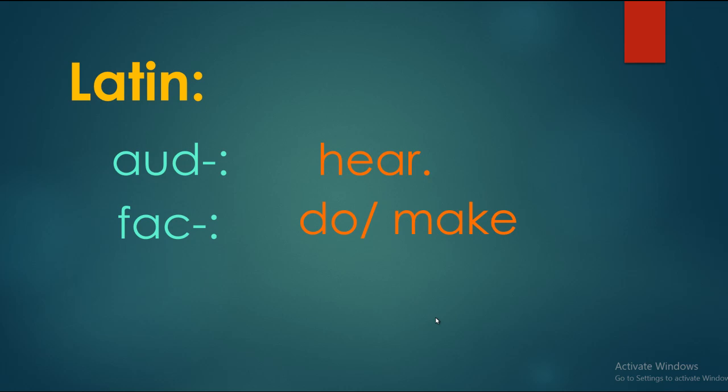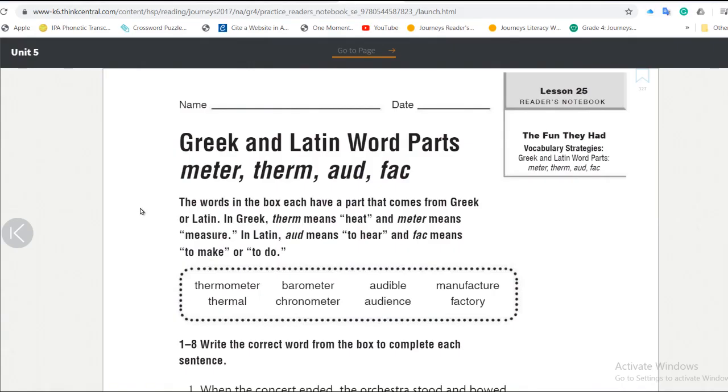What does this have to do with our lesson today? It has to do a lot of things. Today's lesson is going to be found in page 327. It has the same title, which is Greek and Latin word parts: meter, therm, ode, and fact. In Greek, therm means heat, and meter means measure. In Latin, ode means to hear, and fact means to make or to do.